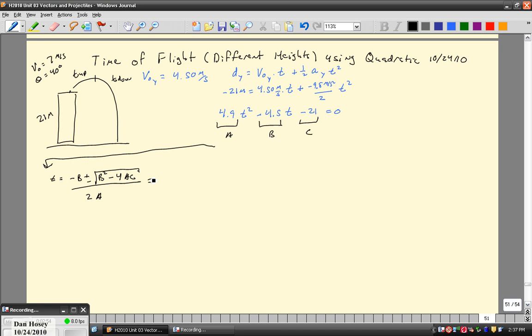So when we plug in the numbers, there's negative negative 4.5, so it's going to be 4.5 plus or minus the square root of b squared, so negative 4.5 squared minus 4 times a is 4.9 times c is negative 21. Take the square root of that all over 2 times 4.9.